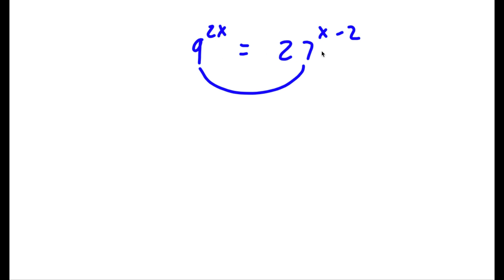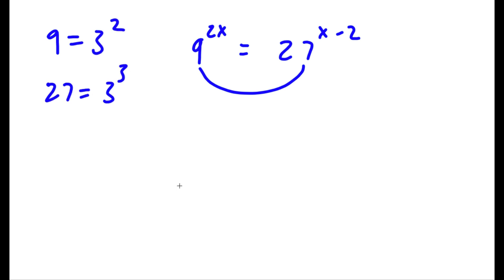Well, 9 and 27 are both powers of 3. So 9 is equal to 3 squared, and 27 is equal to 3 cubed, or 3 to the power of 3. Now if I substitute these two values in for 9 and 27, then both our bases will be 3.